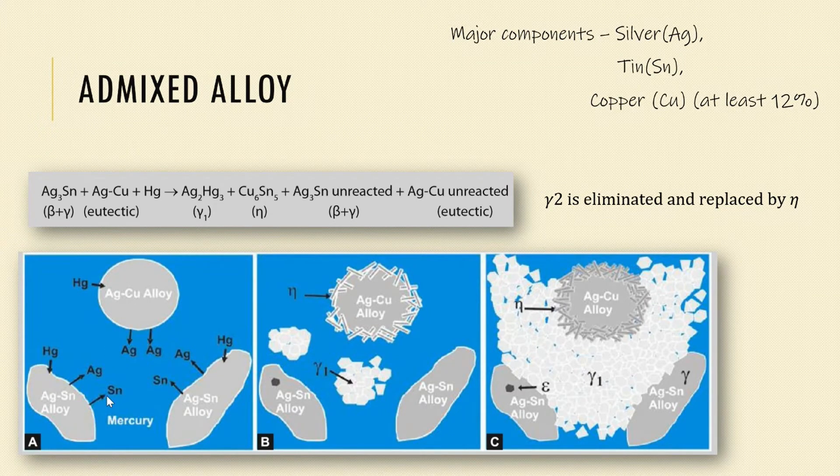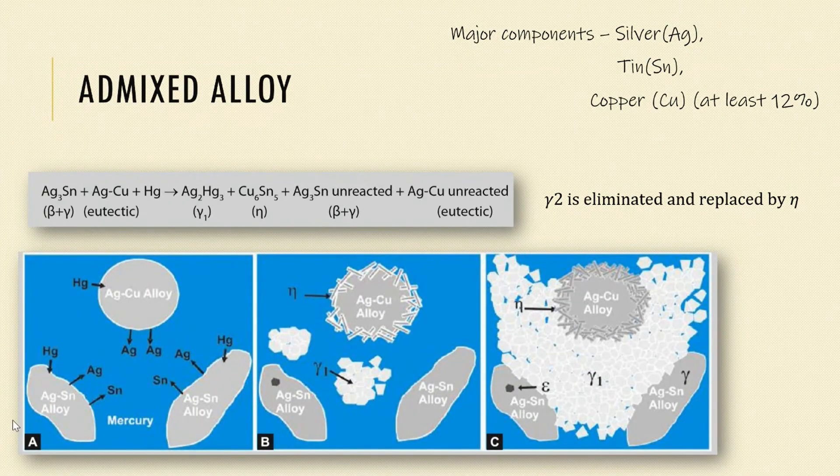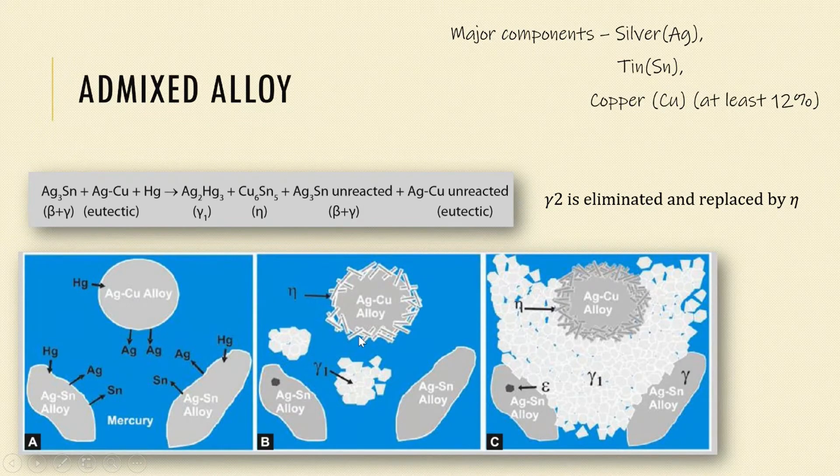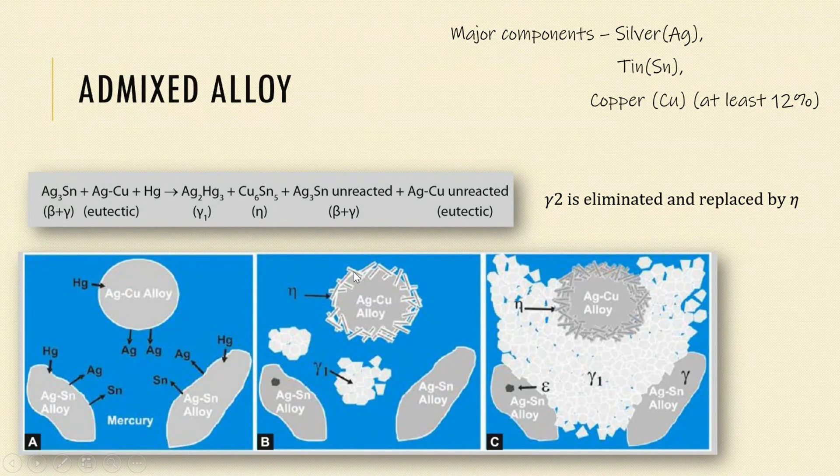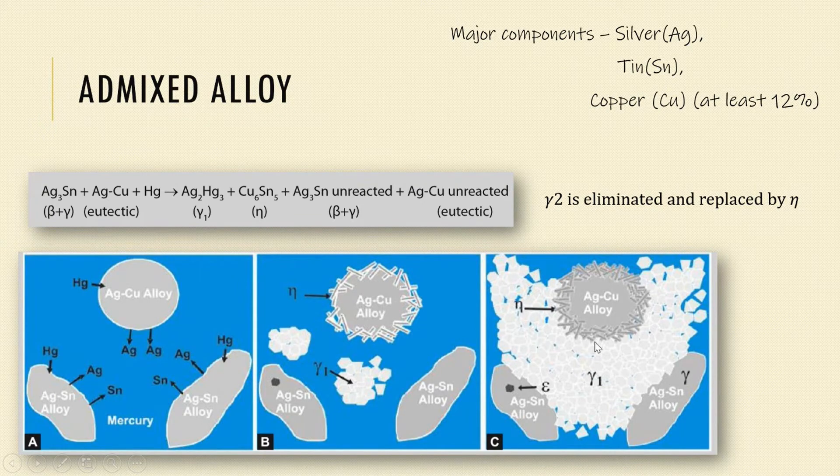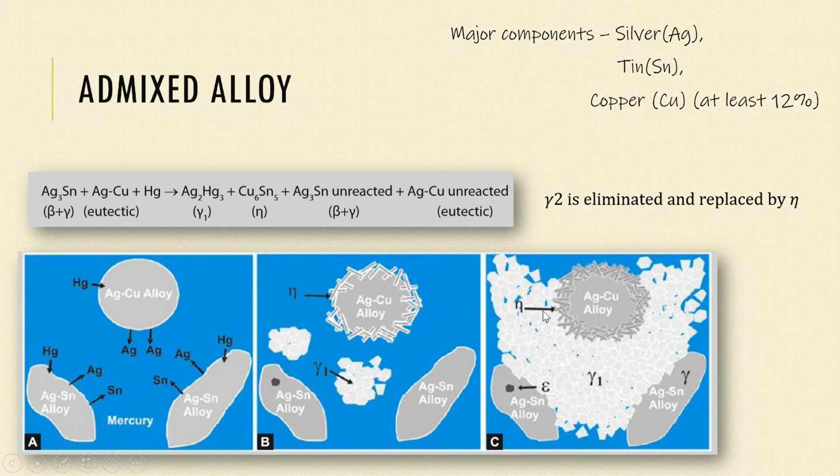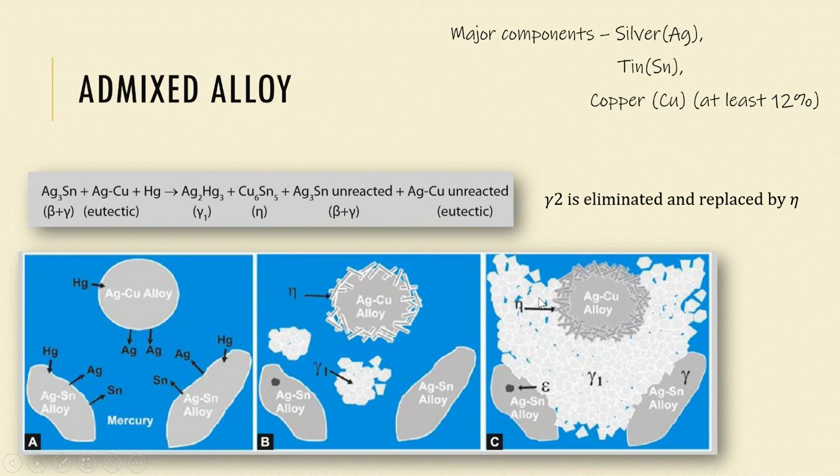In the low copper alloys, the tin reacted with mercury and formed the gamma 2 phase which was unstable. But here the tin particles react with copper and form the eta phase. These eta particles form a layer around the unreacted silver copper particles. The silver and mercury compound, which is the gamma 1 phase, forms the matrix. The unwanted gamma 2 phase is eliminated and replaced by the eta particles.